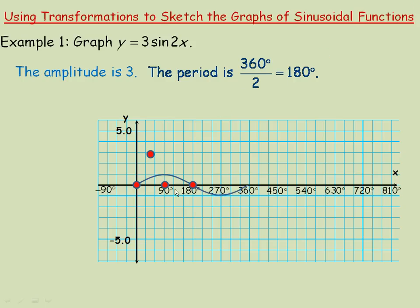Halfway between the middle at 90 and the end at 180, which is 135 degrees, we'll have a y-value of negative 3 because the amplitude is 3. We draw a smooth sine curve between those five points, and that's what one period of y equals 3 sine 2x looks like.